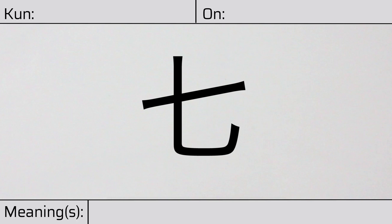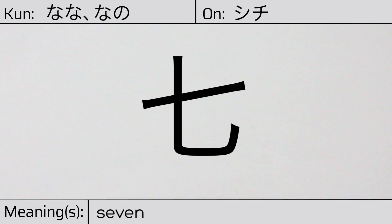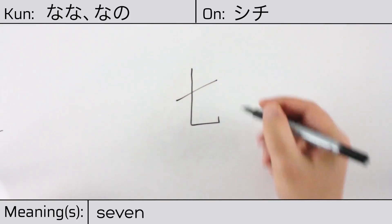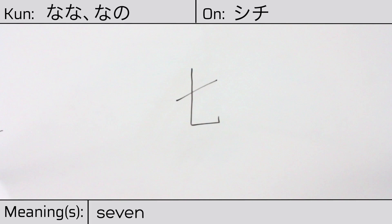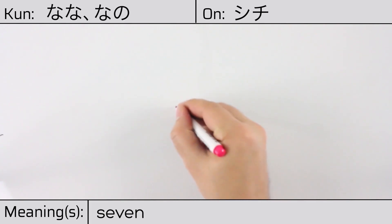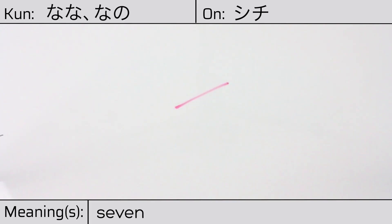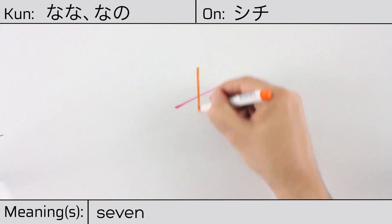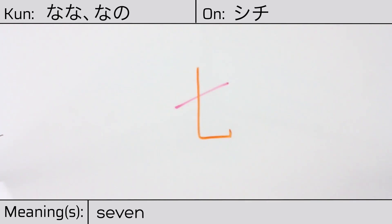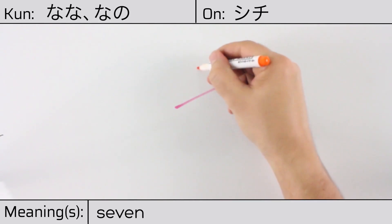This kanji has kunyomi or Japanese readings of nana or nano, and it has an onyomi or Chinese reading of shichi. This character has the meaning seven. Here is the stroke order. This character is made up of the following radicals or parts: kanji character one or ichi, and the second radical known as otsu. You can remember this kanji by the fact that it looks like an upside down seven and means seven.